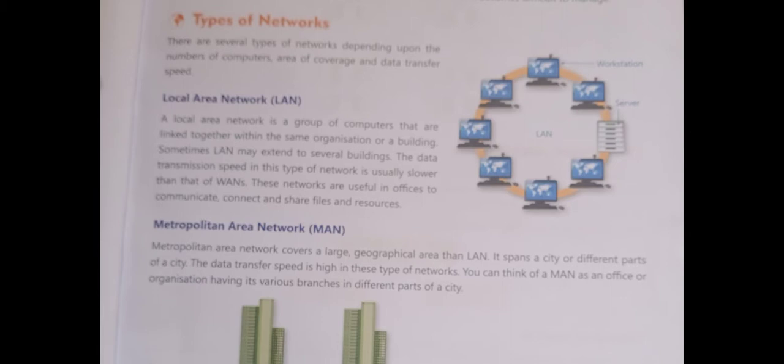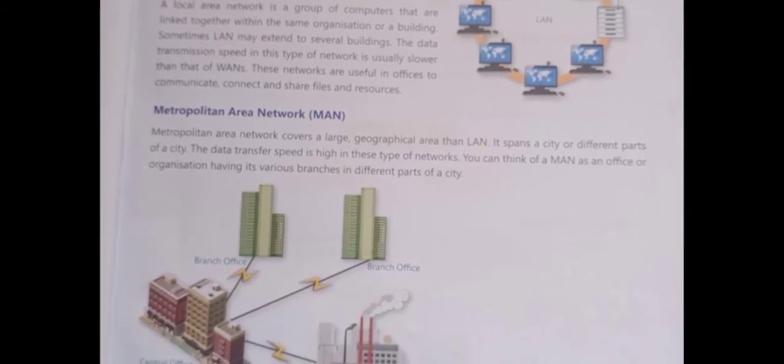There are three types of network: LAN, MAN, and WAN. First is LAN — Local Area Network. A local area network is a group of computers linked together within the same organization. It is a short-range network. Examples of LAN are a school, organization, or university.